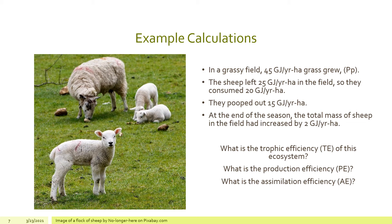Of the 20 gigajoules per year per hectare consumed, the sheep egested 15 — that is, 15 was pooped out and not assimilated. At the end of the season, the total sheep biomass in the field measured 2 gigajoules per year per hectare. So most of the grass that was eaten did not get turned into sheep biomass. From these numbers we can calculate trophic efficiency, production efficiency, and assimilation efficiency.